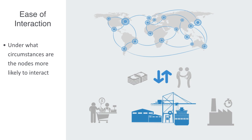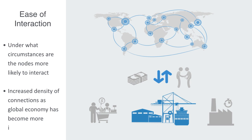Through the reduction in trade tariffs and advancements in transportation and communications, the ease of interaction between producers and distributors on a global level has increased, resulting in the increased density of logistics and trade networks, as regional and national economies have become integrated into the global economy.